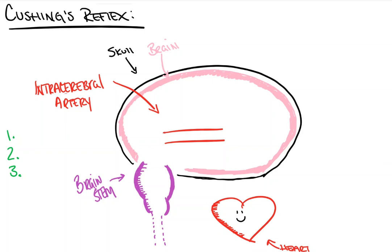This will be a relatively quick video, so let's get started. I apologize for my atrocious drawings. I've already laid out my schematic here. The black line delineates the skull, the pink delineates the brain, we have a red line in the middle which is going to be our intracerebral artery, our purple is our brainstem, and here is our heart. In green on the left, I'm going to write down what the Cushing's reflex is.